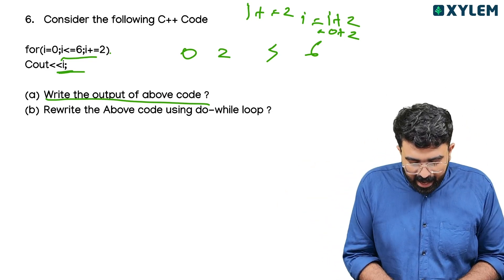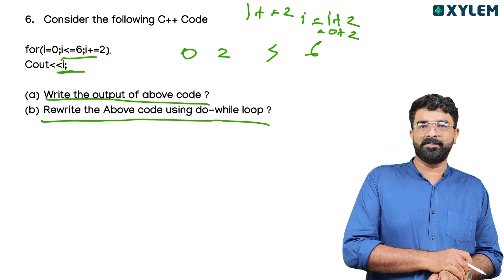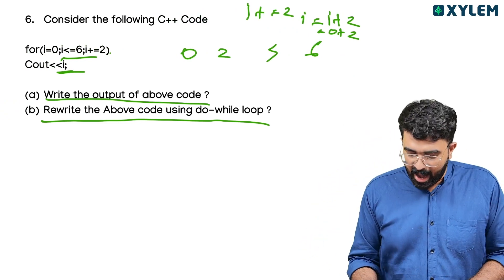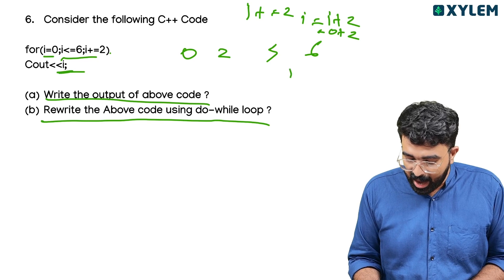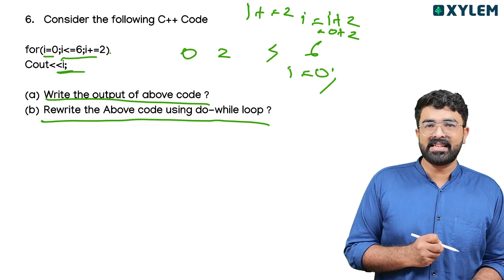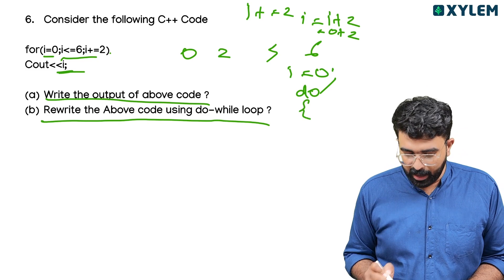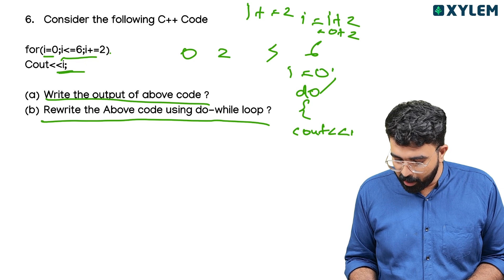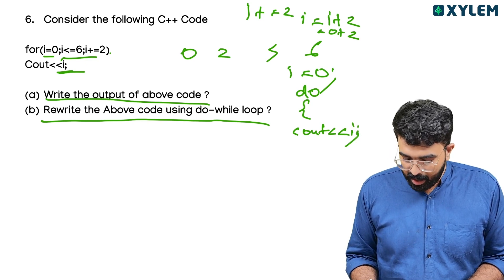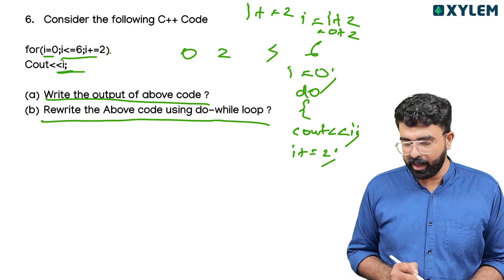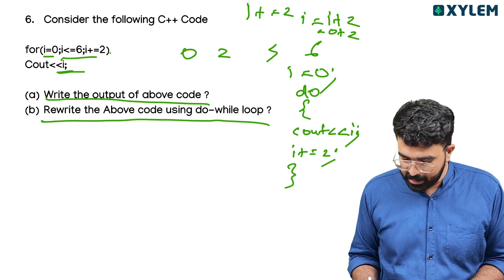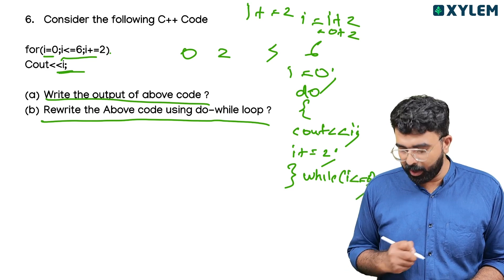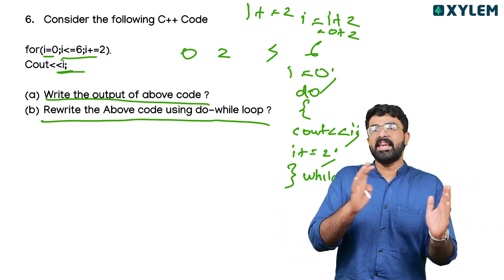Next question: rewrite the above code using a do-while loop. i is equal to 0; do { cout i; i plus equals 2; } while i is less than or equal to 6.